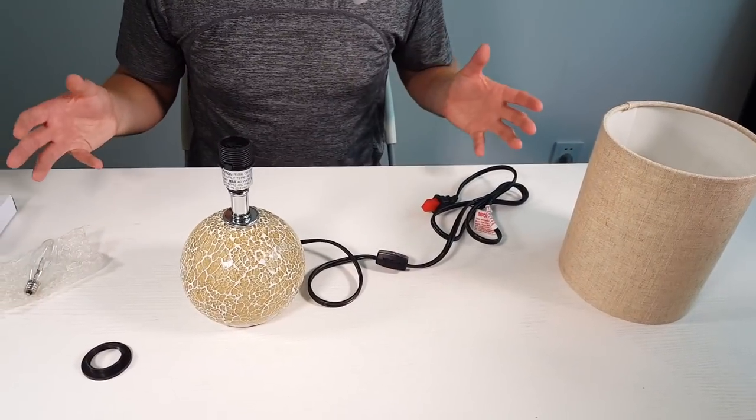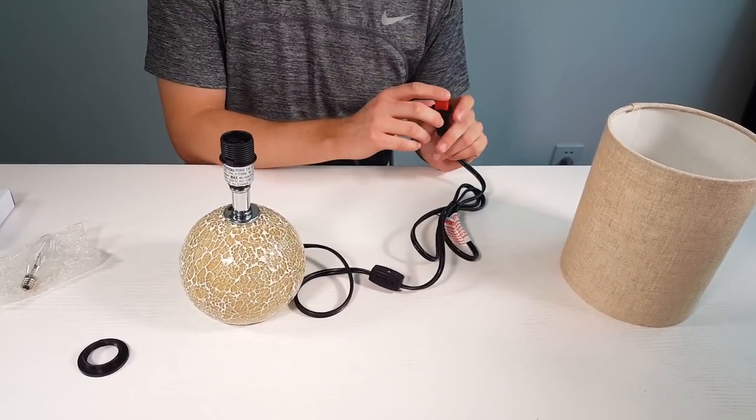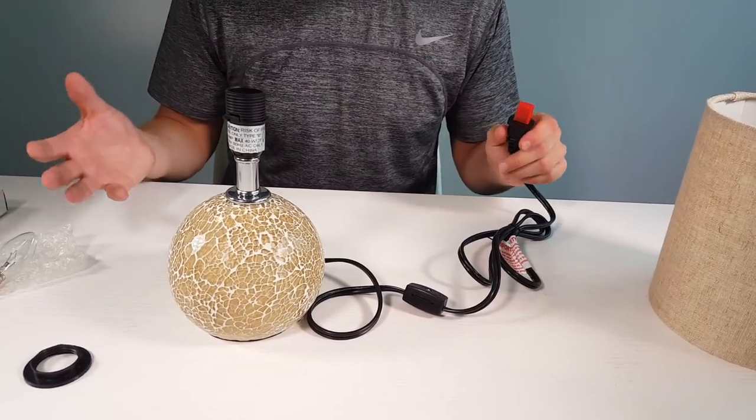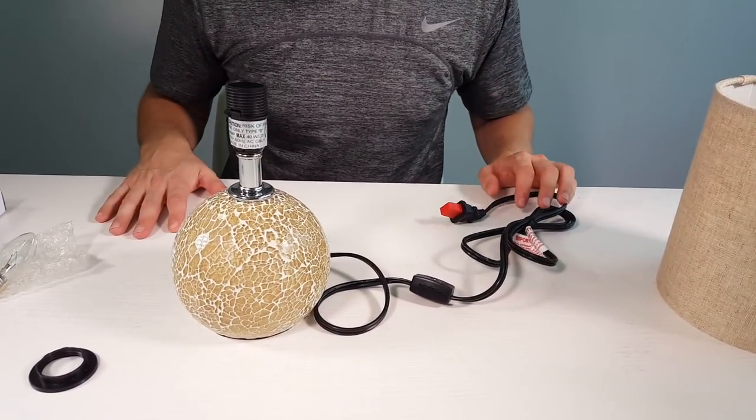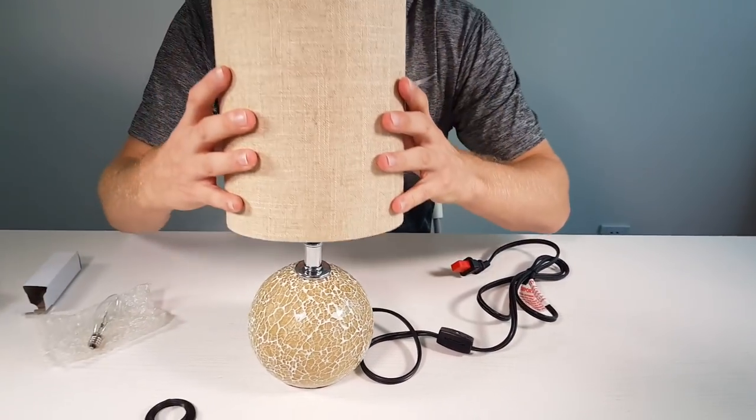Now we're going to put together the lamp. First, you want to make sure you don't have the lamp plugged in, especially when you're putting in the light bulb. Just a caution to make sure you're not getting electrocuted. First, grab the lampshade and place it on top.